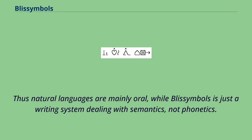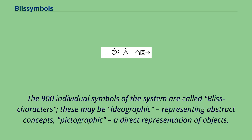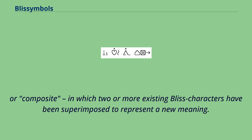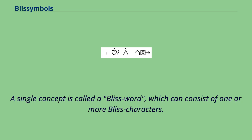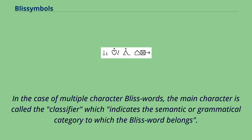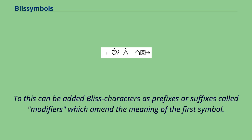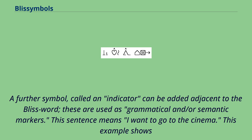The 900 individual symbols of the system are called Bliss characters. These may be ideographic, representing abstract concepts; pictographic, a direct representation of objects; or composite, in which two or more existing Bliss characters have been superimposed to represent a new meaning. Size, orientation, and relation to the skyline and earth line affects the meaning of each symbol. A single concept is called a Bliss word, which can consist of one or more Bliss characters. In the case of multiple character Bliss words, the main character is called the classifier, which indicates the semantic or grammatical category to which the Bliss word belongs. To this can be added Bliss characters as prefixes or suffixes called modifiers, which amend the meaning of the first symbol. A further symbol called an indicator can be added adjacent to the Bliss word, used as grammatical and/or semantic markers.